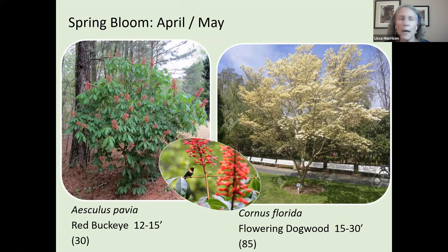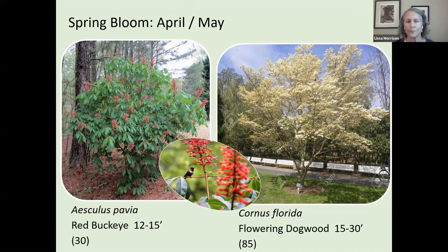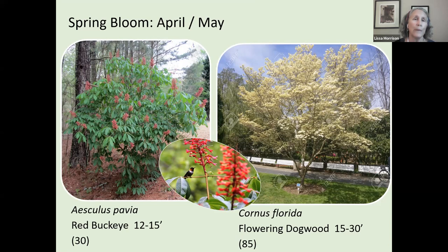Red buckeyes are just beginning to bloom in town, as are the dogwoods. Both are great medium-sized landscaping trees — about the size of a dogwood. Both do best when they get afternoon shade; they get crispy-looking in too much sun without enough water in summer. The dogwood is host to approximately 85 different Lepidoptera — the order that includes all butterflies and moths.